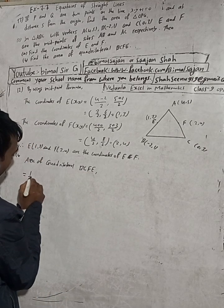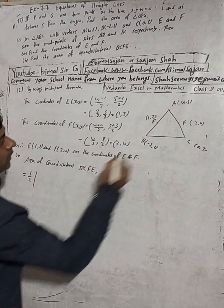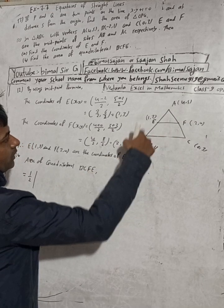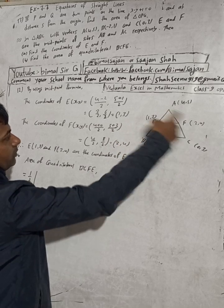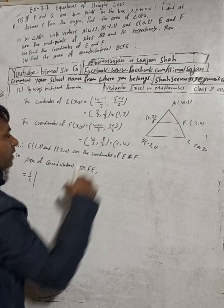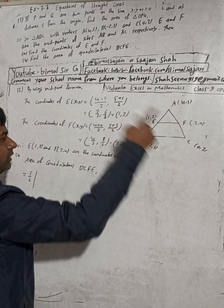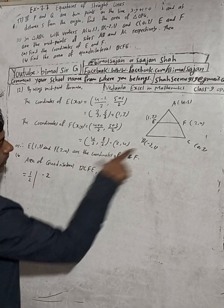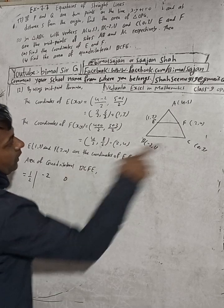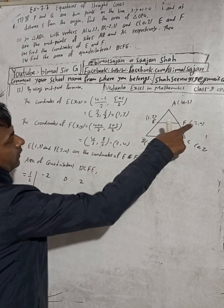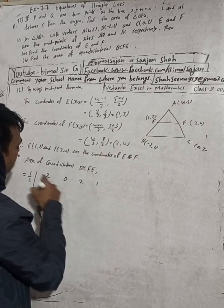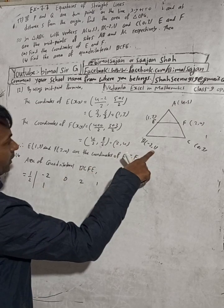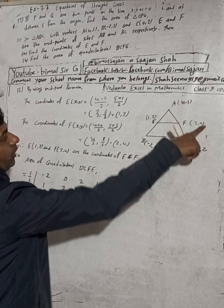Area of quadrilateral EBCF equals 1/2 times the determinant. Going anticlockwise from B, E, C, F: B is (-2,1), E is (1,3), C is (0,3), F is (2,4), and repeat B at (-2,1). Setting up the calculation: -2, 0, 2, 1, then -2 again for x-coordinates, and 1, 3, 3, 4, then 1 again for y-coordinates.